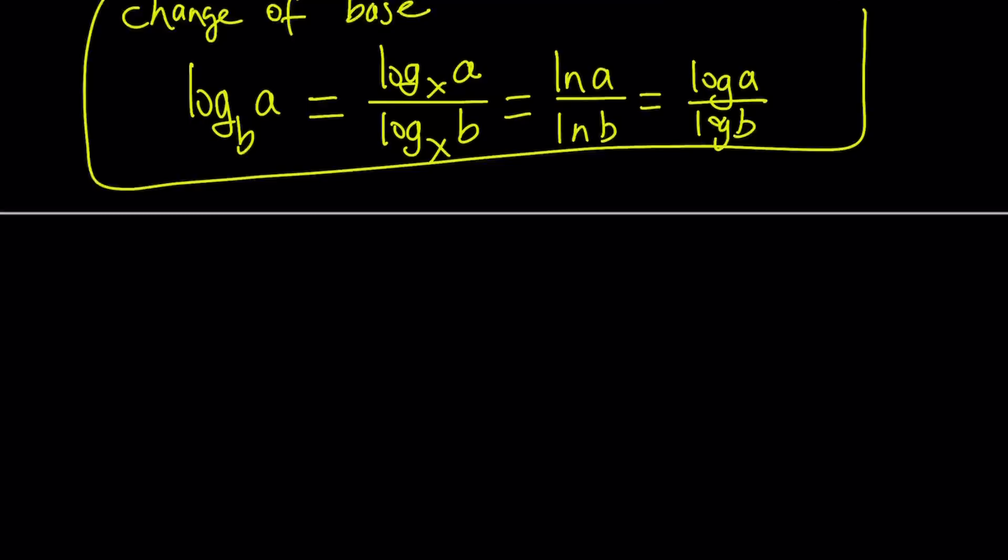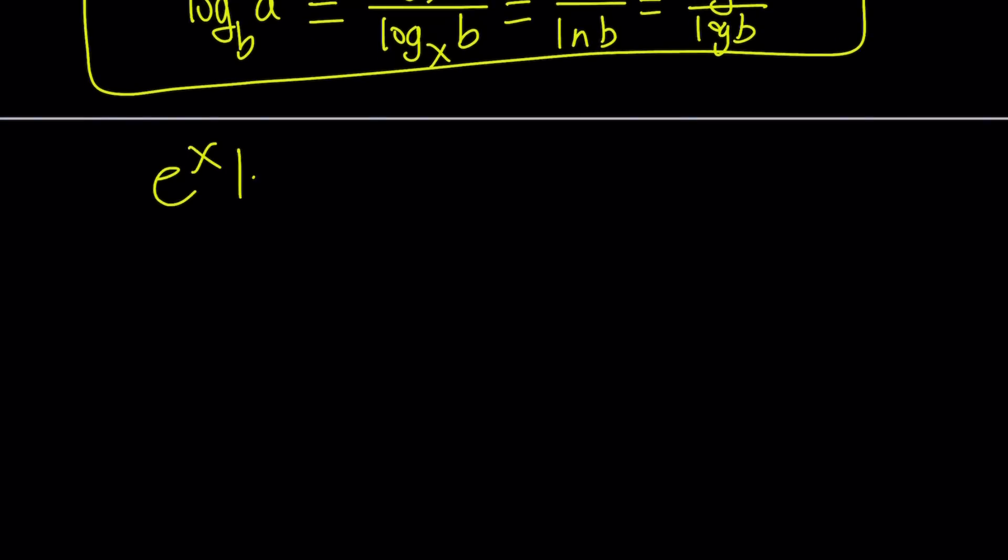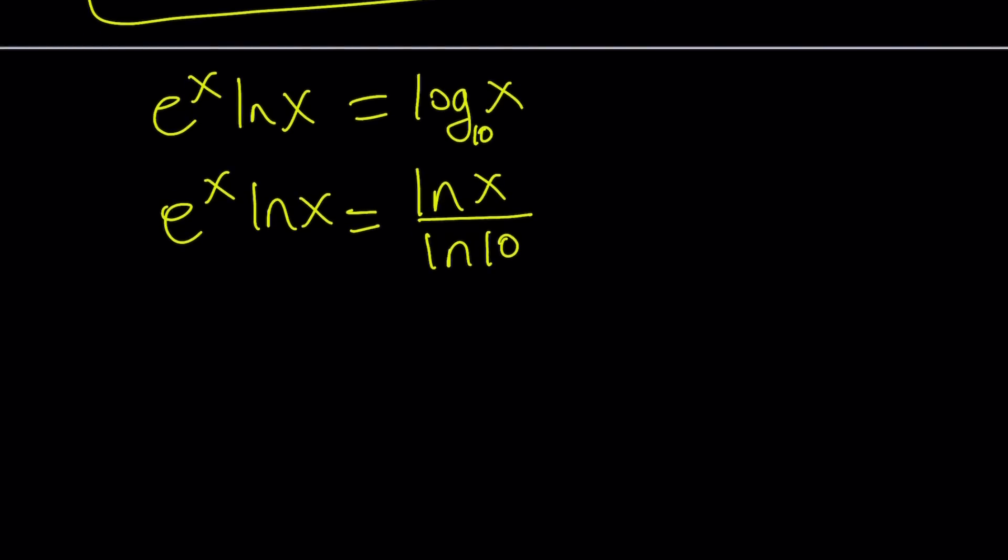Let me rewrite it: e to the x ln x equals log x. I'm going to turn the log x into a quotient of ln's. Since the base is 10 here, you can write it if you want. This can be written as ln x over ln 10. ln 10 is a constant, we'll talk about that in a little bit.